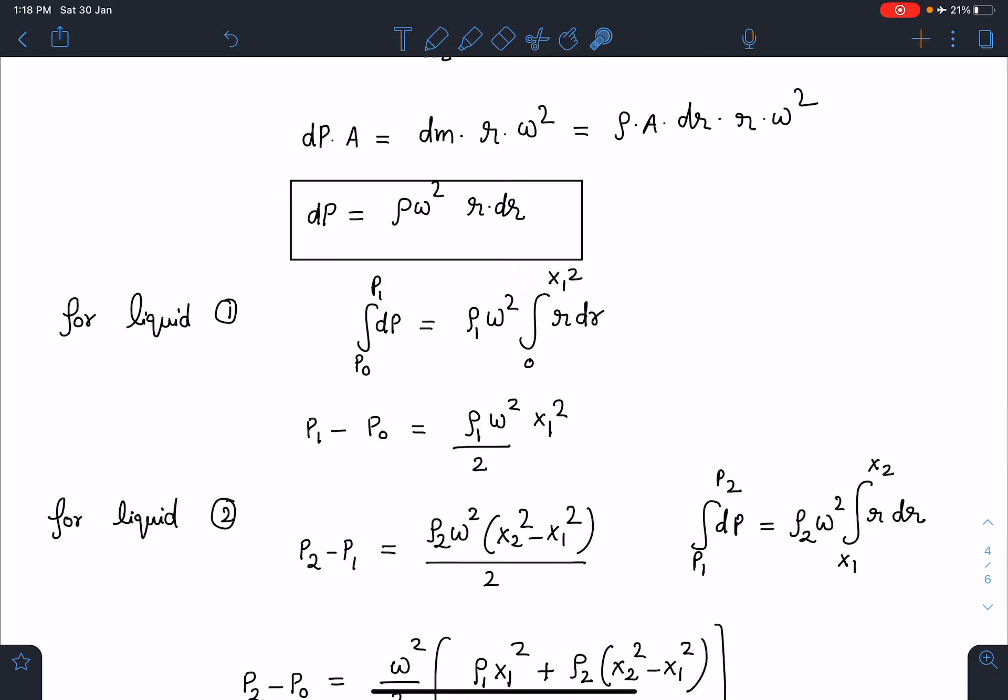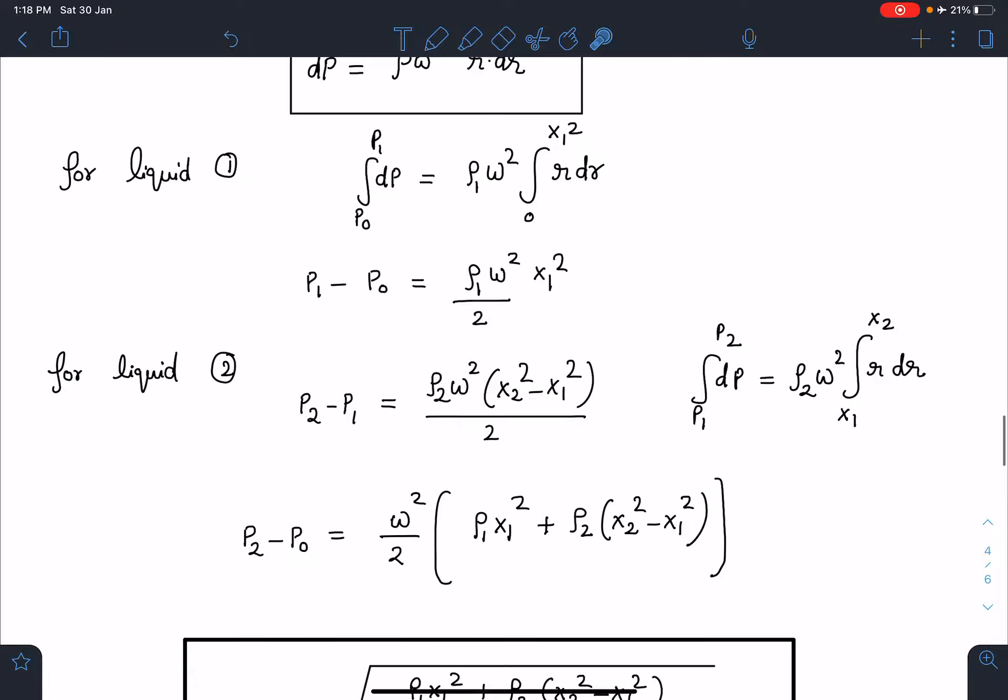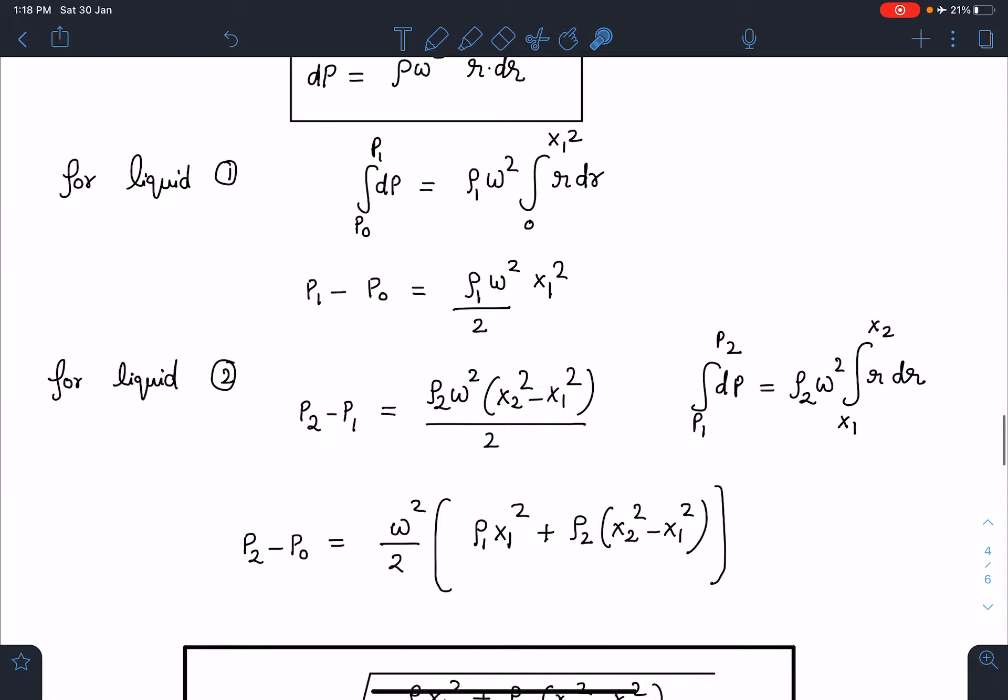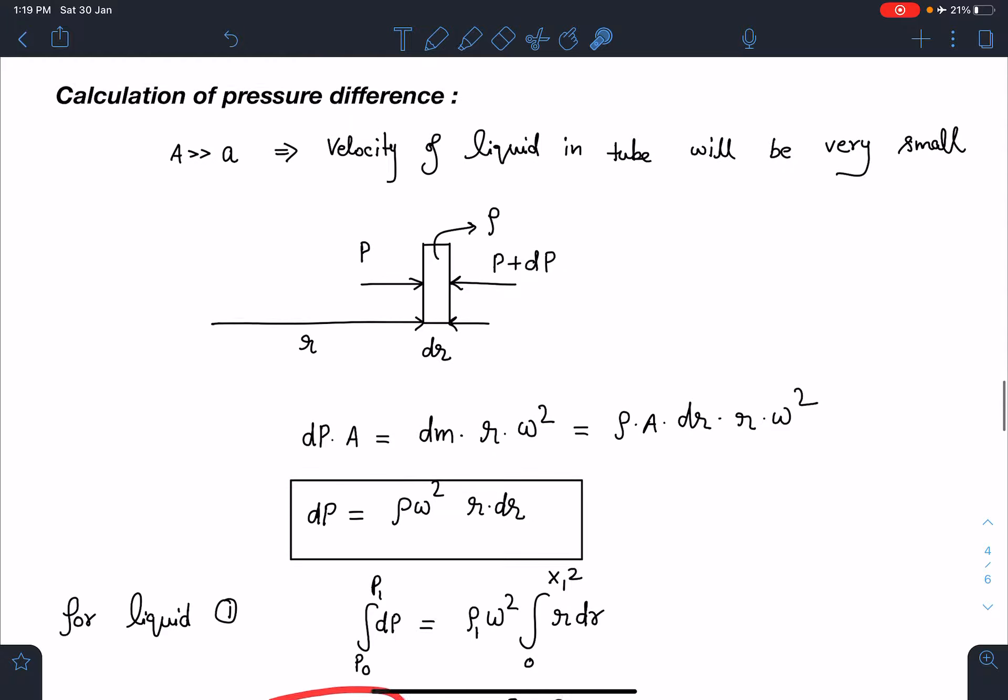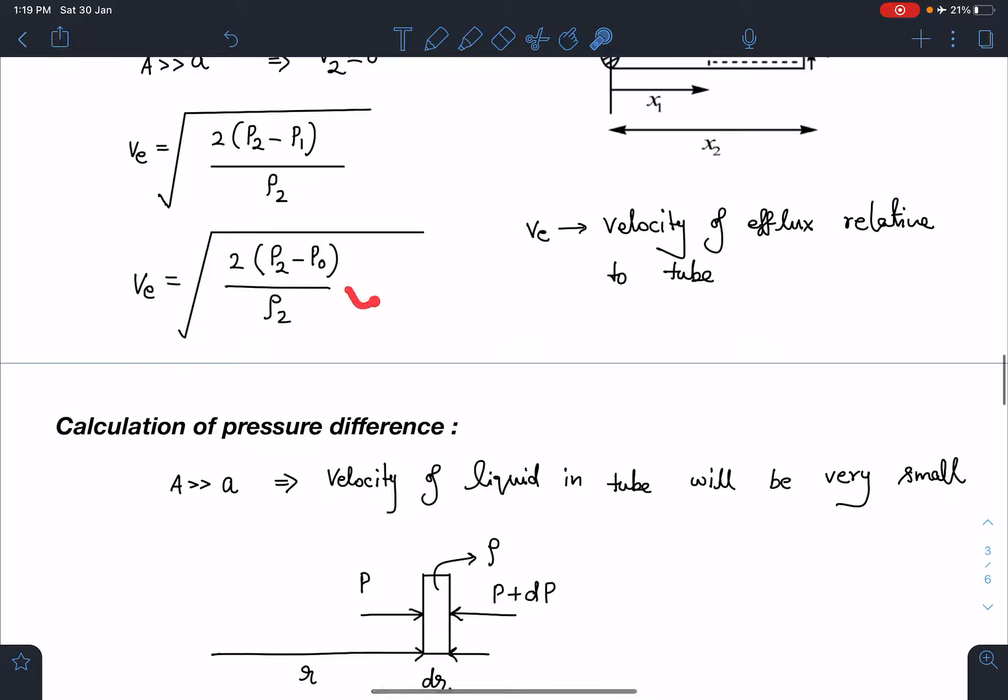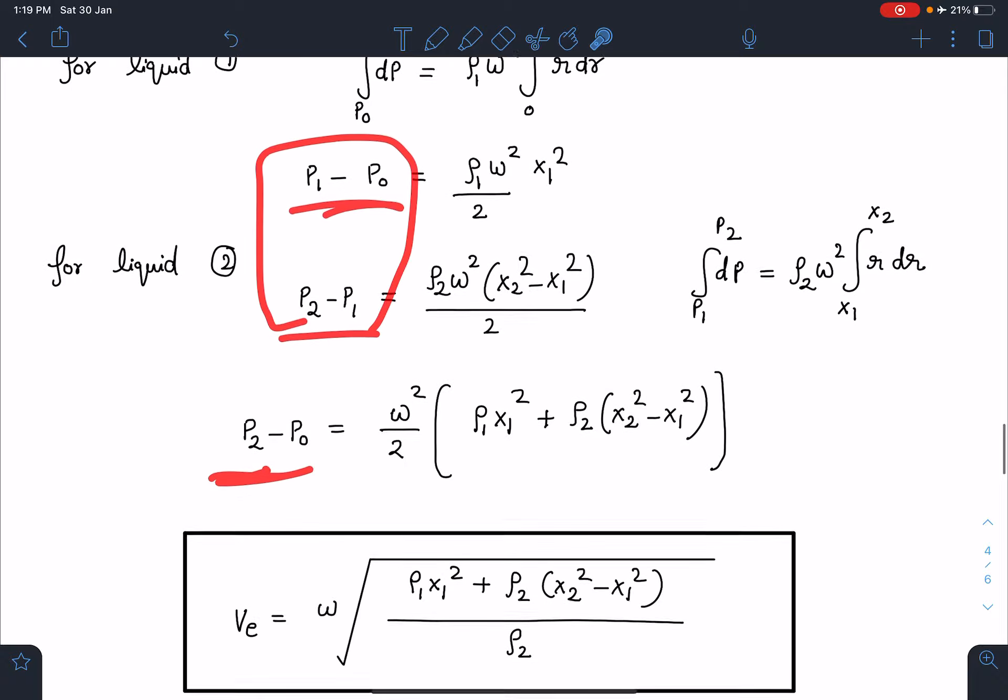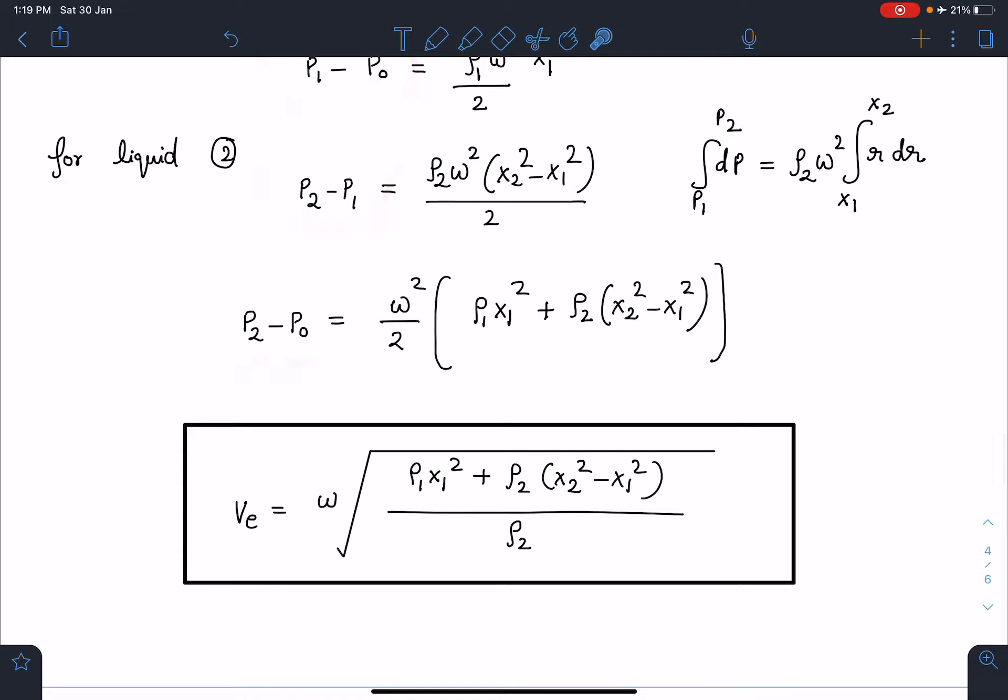For other liquids also we can write. However, in the original case there are only two liquids. So, just add these two equations here. We are going to get p2 minus p0, this is what is required here. When I do this I am going to get omega times rho1 x1 square plus rho2 x2 square minus x1 square divided by rho2. So, this is going to be the velocity of efflux here and for n such liquids I can generalize this result.